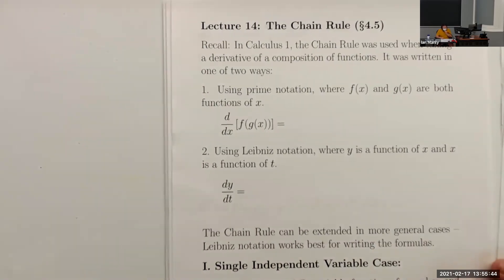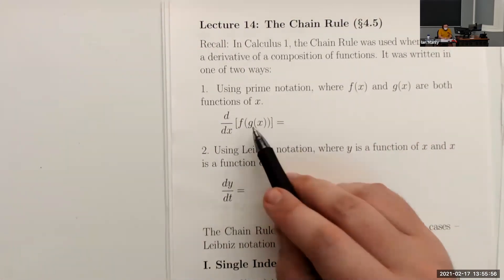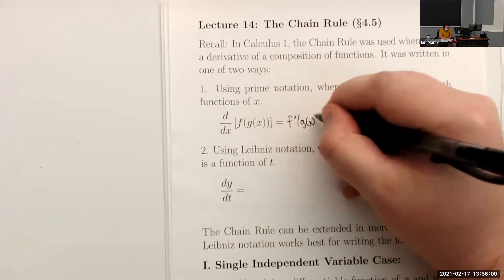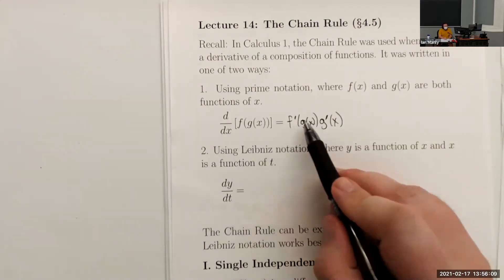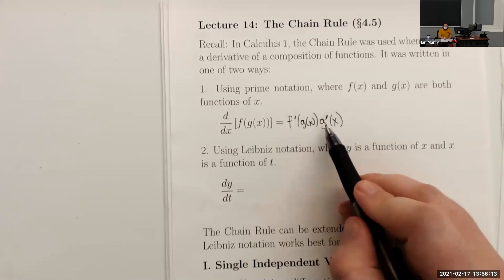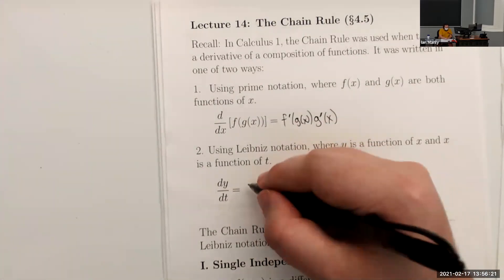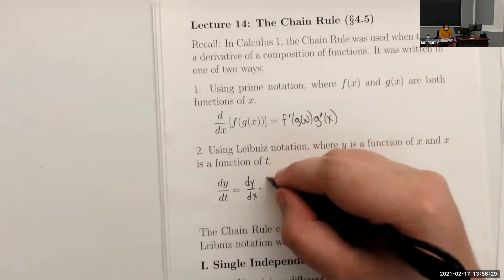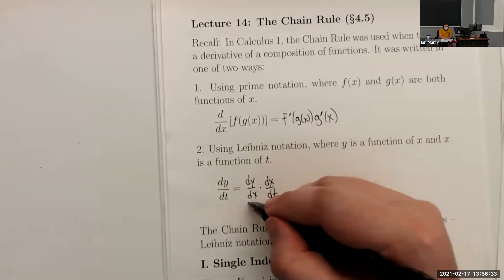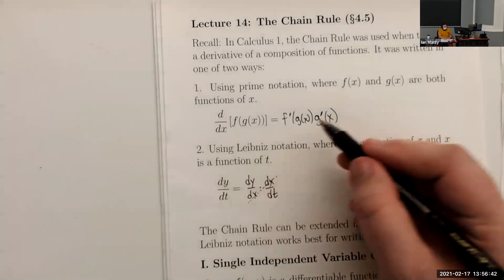Let's remind ourselves what the chain rule was back in Calc 1. Using prime notation, the derivative of F of G of x is F prime of G of x times G prime of x — taking the derivative of the outside function, keeping the original inside plugged in, then multiplying by the derivative of the inside. In Leibniz notation we write this as dy/dx times dx/dt, and you can imagine the dx's canceling out to give dy/dt.